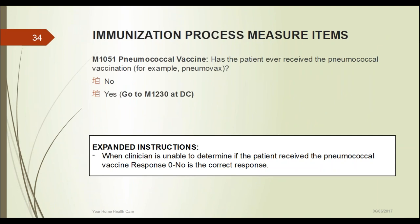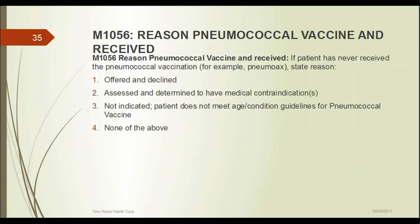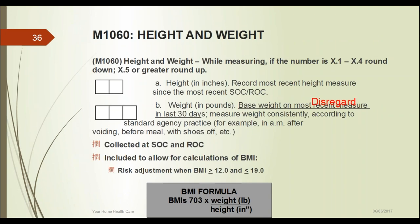The pneumococcal vaccine is a simple yes or no question — have they ever received it? If you can't determine if the patient received it, response 0 (no) is the correct response. M1056 asks why the patient never received it, with four options: offered and declined; assessed and determined to have medical contraindications; not indicated based on age condition guidelines; or none of the above.